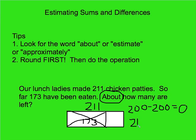211 is about 210, and 173 is close to 170. If I count up by tens from 170 — 180, 190, 200, 210 — I'd need 40 more, which means there are about 40 chicken patties left. That makes a lot more sense. So I started with the word 'about,' which told me to round. I rounded first — trying hundreds first and then down to tens — and only after rounding did I worry about the operation.